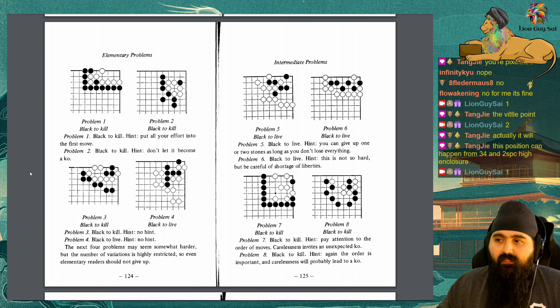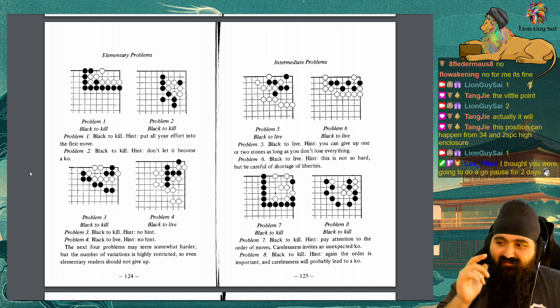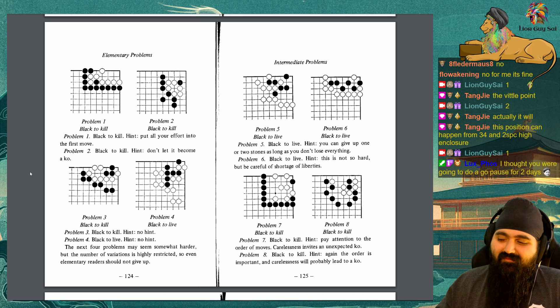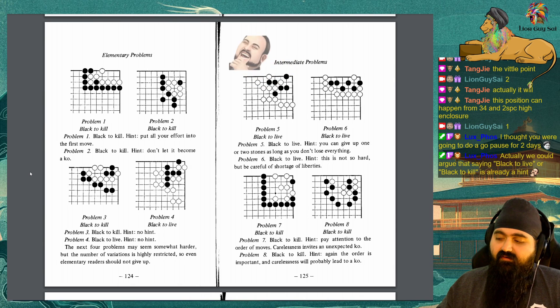The cases where the fundamental rule works without any alteration may be in the minority, but is where you should start nonetheless. Now that we have the fundamentals, let's look at some more life and death problems. Some of them can be solved in the fundamental way and some cannot. Try to force the enemy counter moves. The level is elementary to intermediate. Elementary problems. Problem 1: Black to kill. Hint: Put all your effort into the first move. Problem 2: Black to kill. Hint: Don't let it become a co. Problem 3: Black to kill. Hint: No hint. Problem 4: Black to live. Hint: No hint. The next four problems may seem somewhat harder, but the number of variations is highly restricted, so even elementary readers should not give up. Intermediate problems. Problem 5: Black to live. Hint: You can give up 1 or 2 stones as long as you don't lose everything. Problem 6: Black to live. Hint: This is not so hard, but be careful of shortage of liberties. Problem 7: Black to kill. Hint: Pay attention to the order of moves. Carelessness invites an unexpected co. Problem 8: Black to kill. Hint: Again, the order is important, and carelessness will probably lead to a co.